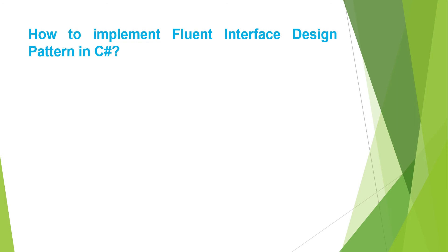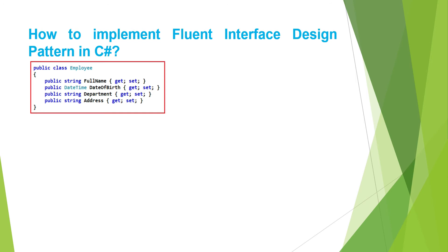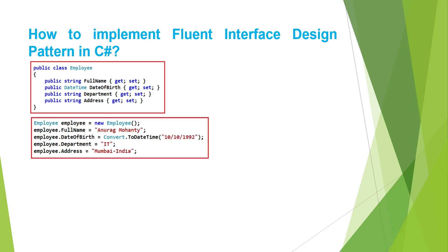Let us understand how to implement the fluent interface design pattern in C# with an example. Let us say we have an Employee class. The Employee class has four properties: FullName, DateOfBirth, Department, and Address. If we want to consume the employee object, we generally create an instance of the Employee class and set the respective properties using the dot operator to specify the property name and set values.